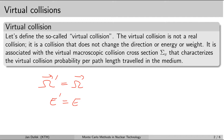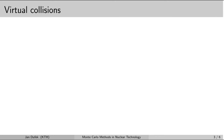The virtual collisions are associated with the so-called virtual macroscopic collision cross-section sigma_v. So 1 over sigma_v gives the mean distance between the virtual collisions.